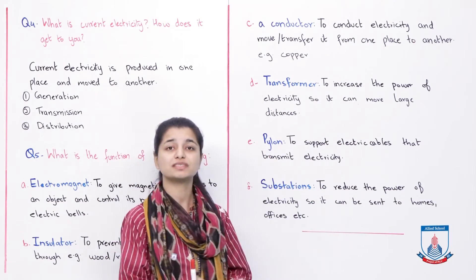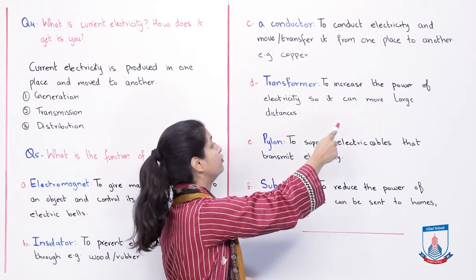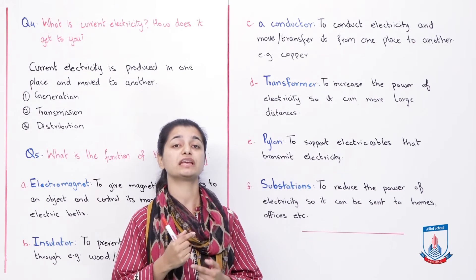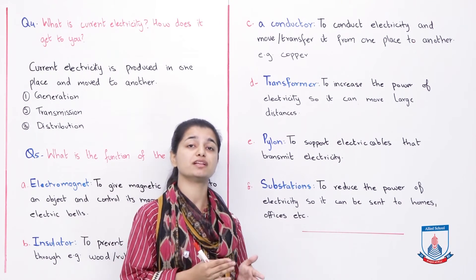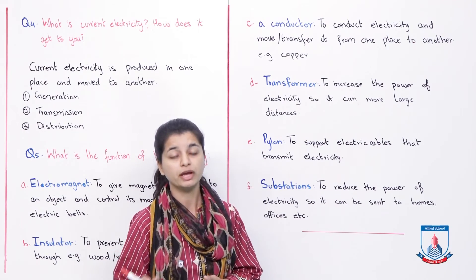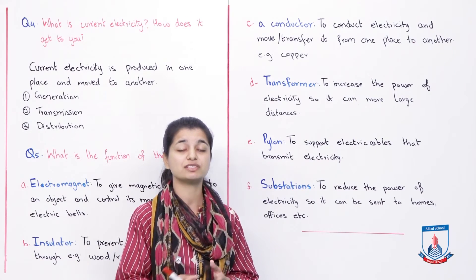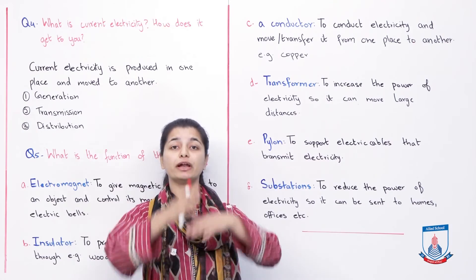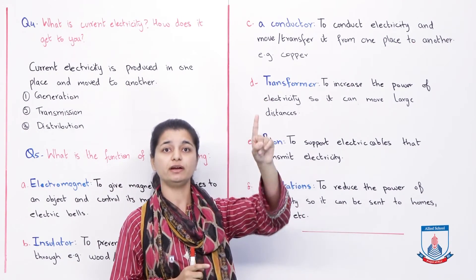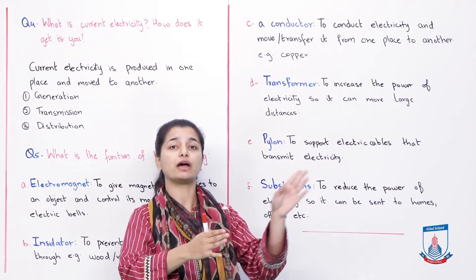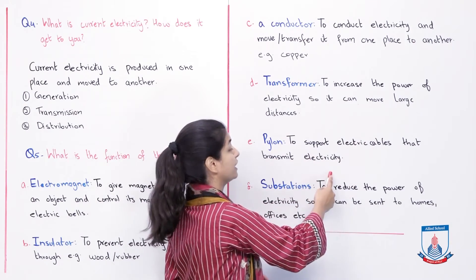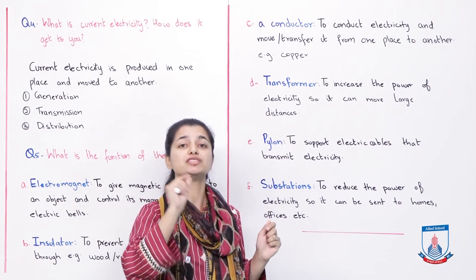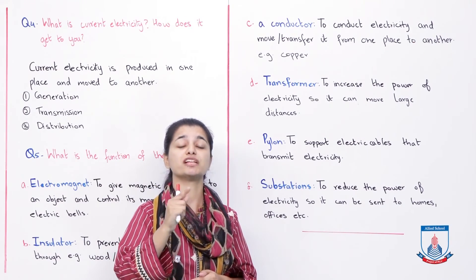Next we have a transformer. What is its function? To increase the power of electricity so it can move large distances. The transformer increases the power of electricity so that it is able to travel very far. Without the transformer, the electricity would not be able to travel those distances. Pylons are also used to support the overhead electric cables and keep them in place, making electricity transmission easier.